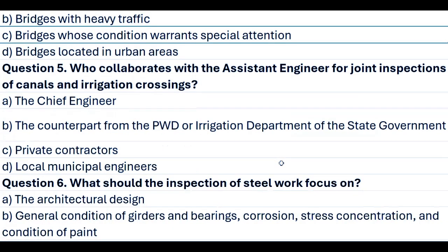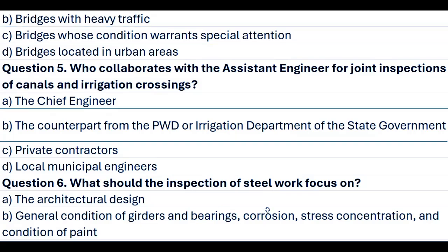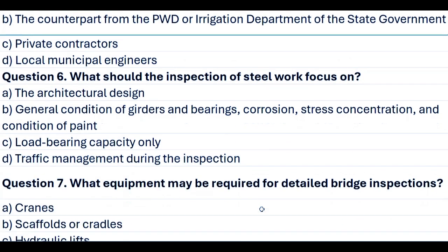Question 5. Who collaborates with the assistant engineer for joint inspections of canals and irrigation crossings? A. The chief engineer. B. The counterpart from the PWD or irrigation department of the state government. C. Private contractors. D. Local municipal engineers. Answer B. The counterpart from the PWD or irrigation department of the state government.